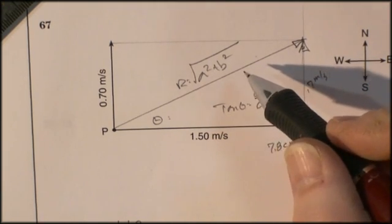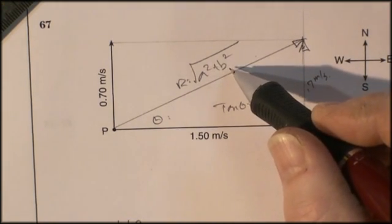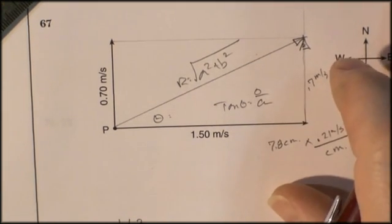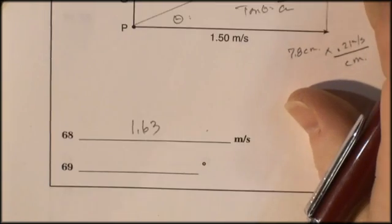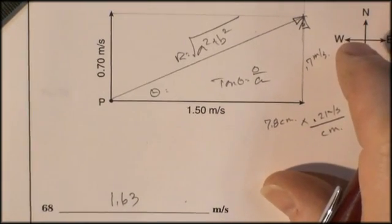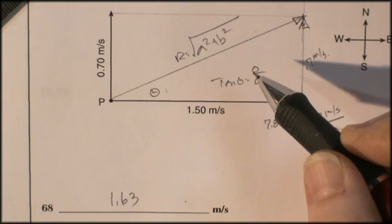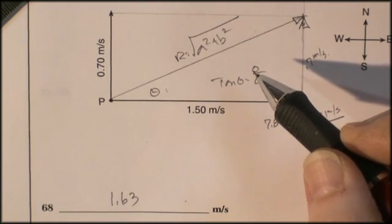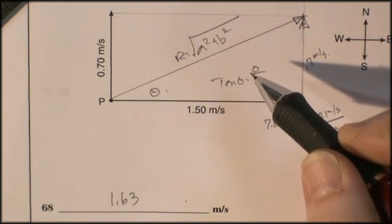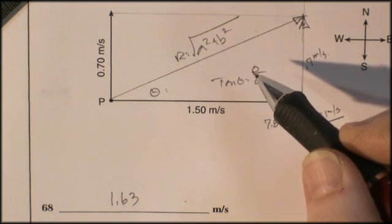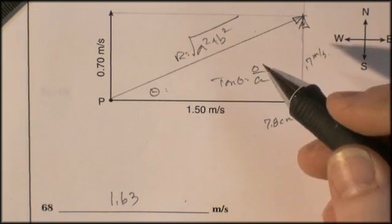You know, real quick, I can get my calculator out and I could use Pythagorean to calculate what it's going to be. Let's see. Let's see if I can't try that out and see what I get. 0.7 squared plus 1.5 squared. And then take the square root of that. That's got to be that one. And I get 1.65.